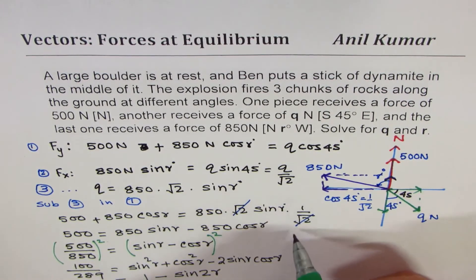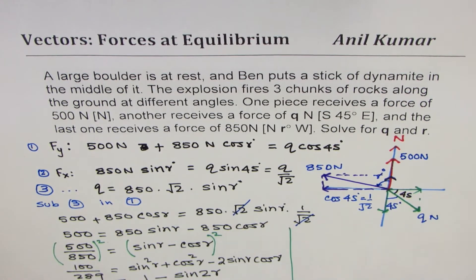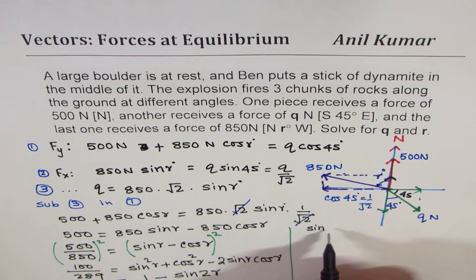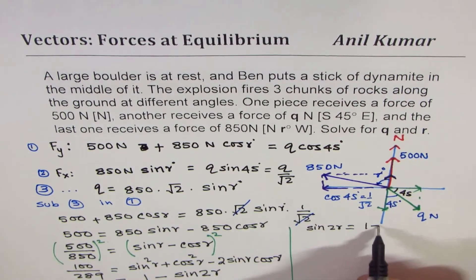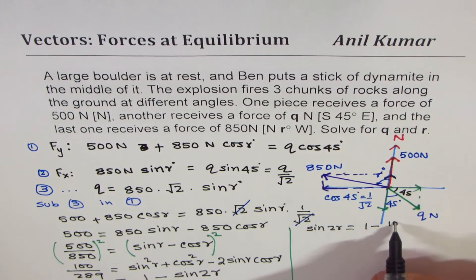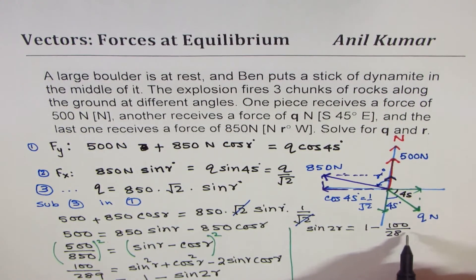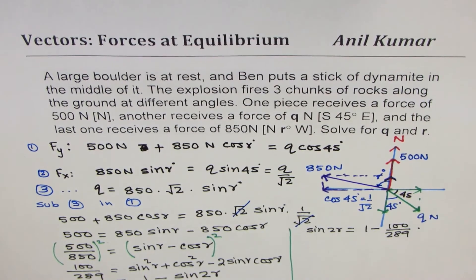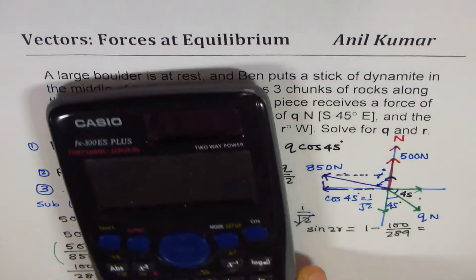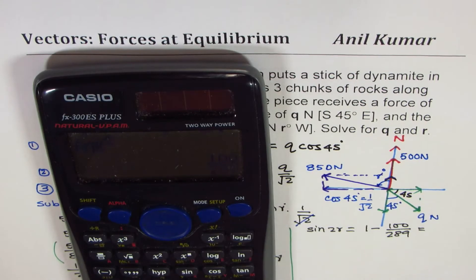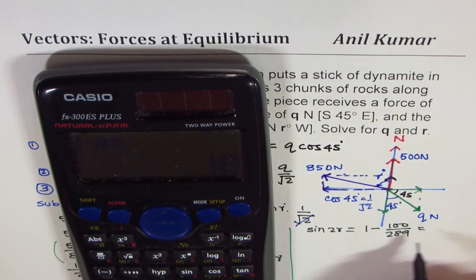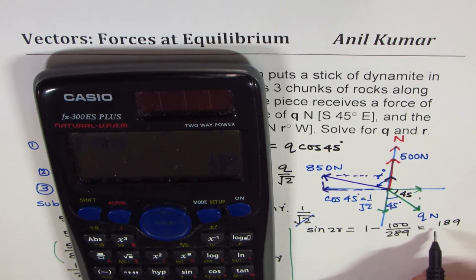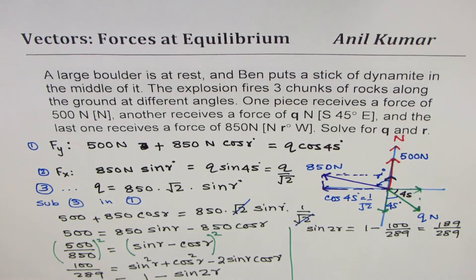On the right side, if I square, I get sine square r plus cos square r minus 2 times sine r cos r. Now, sine square r plus cos square r is 1, so I could write this as 1, minus 2 sine r cos r is sine 2r. That's a trigonometric identity. We have very limited space, so I'll just squeeze in my solution here. I can take sine 2r on this side, and write this as equal to 1 minus 100 over 289, which is equal to 189 over 289.